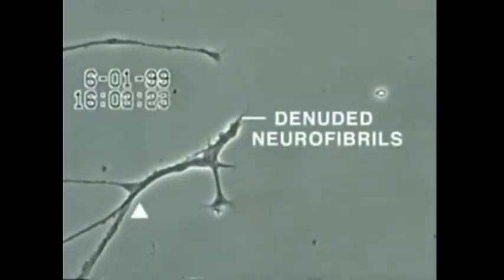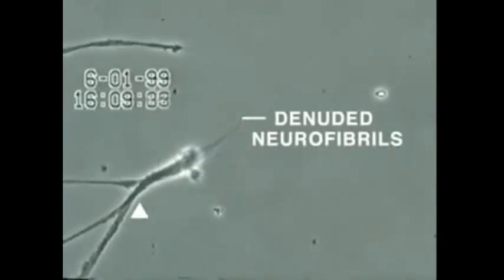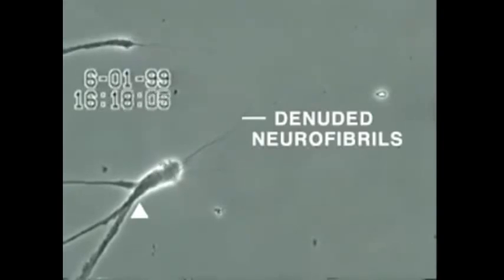Leaving behind the denuded neurofibrils seen here. In contrast, other heavy metals added at this same concentration, such as aluminum, lead, cadmium, and manganese, did not produce this effect. To understand how mercury causes this degeneration, let us return to our illustration.